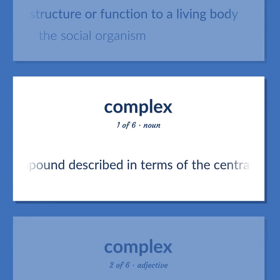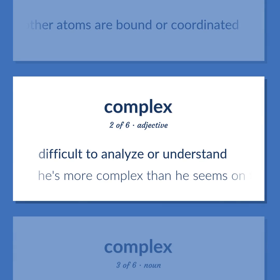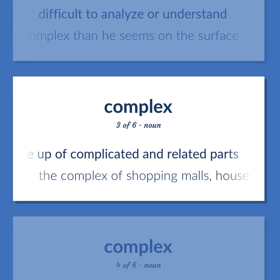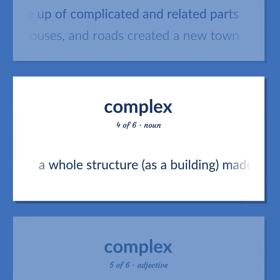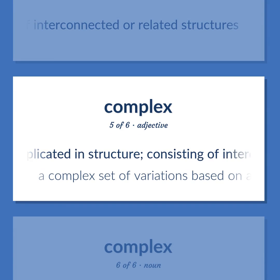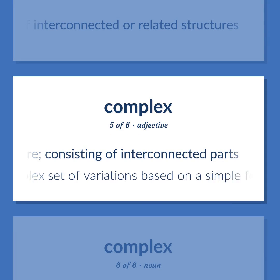COMPLEX — A compound described in terms of the central atom to which other atoms are bound or coordinated. Difficult to analyze or understand — e.g., 'He's more complex than he seems on the surface.' A conceptual whole made up of complicated and related parts — e.g., 'The complex of shopping malls, houses, and roads created a new town.' A whole structure, as a building, made up of interconnected or related structures. Complicated in structure, consisting of interconnected parts — e.g., 'A complex set of variations based on a simple folk melody.'